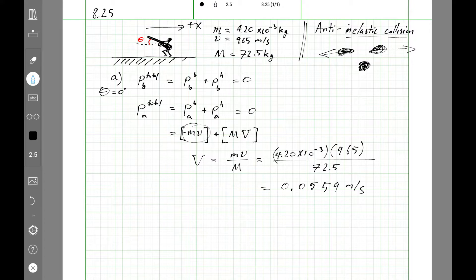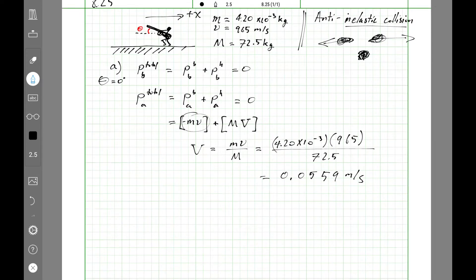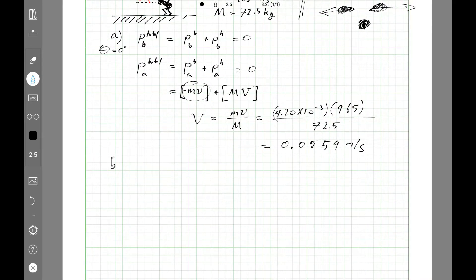With part B, so with part B theta is, there it is, 56 degrees. So for part B make theta equal to 56 degrees.